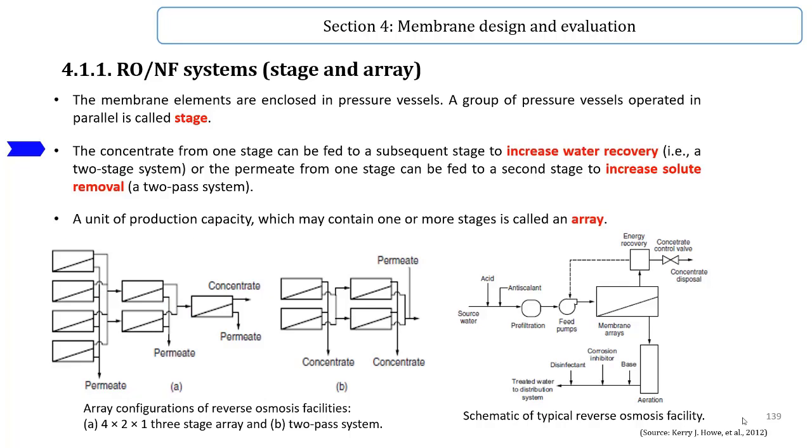Reverse osmosis systems can also have distinct reverse osmosis units referred to as a pass. The permeate from one stage can be fed to a second stage to increase solute removal in a two-pass system. For applications where high-purity water is required, two-pass systems are common because they essentially treat the water twice in two distinct systems.